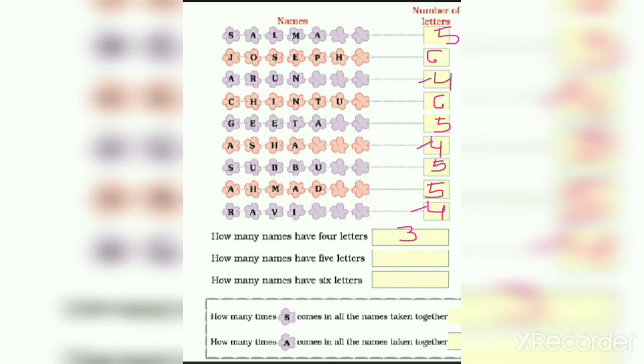How many names have 5 letters? Let us see. 1, 2, 3, 4. 4 names have 5 letters.